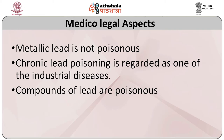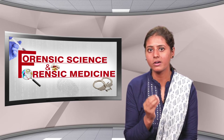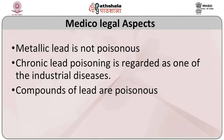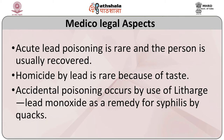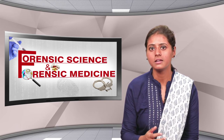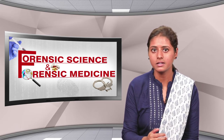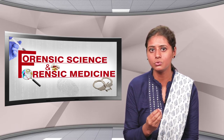Medico-legal aspects: metallic lead is not poisonous but when acted upon by intestinal secretions it may be absorbed as a salt and act as a poison. Chronic lead poisoning is regarded as one of the industrial diseases. Compounds of lead are poisonous. Acute lead poisoning is rare and the person usually recovers. Homicide by lead is rare because of its taste. Accidental poisoning occurs by use of lead monoxide as a remedy by quacks. It is used as a criminal abortifacient, the paste on abortion sticks containing red lead or lead tetraoxide. Red lead mixed with arsenic is used as cattle poison.